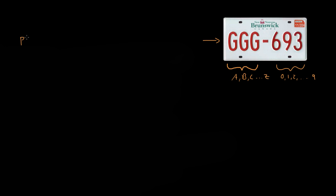So what's the probability of getting this particular plate? If the first three can only be letters, we need to find the probability of getting a G first, then the probability of the second letter being a G, then the next letter also being a G. Then we need the probability of the next part being a 6, then the probability of getting a 9, and finally the probability of getting a 3.